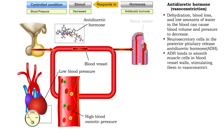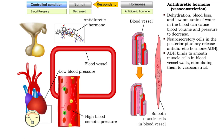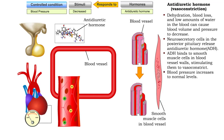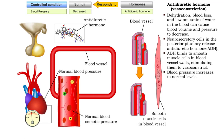In high concentrations, ADH can also cause vasoconstriction in the walls of arterioles. The narrowing of the lumen in these blood vessels raises blood pressure.